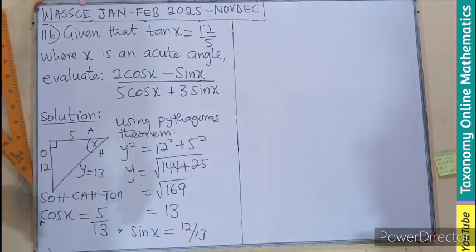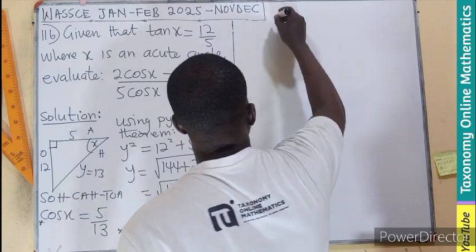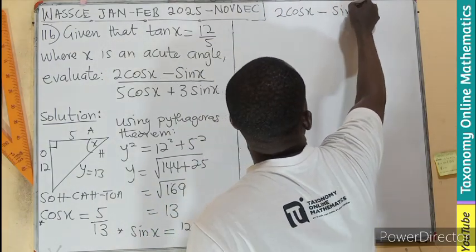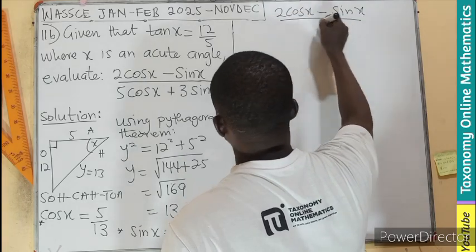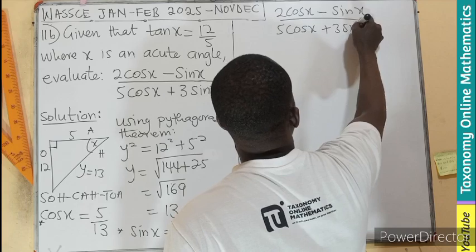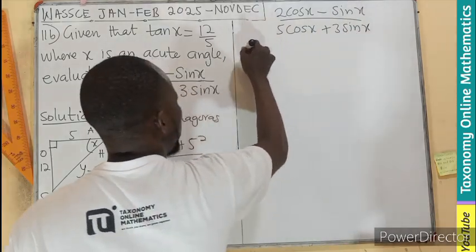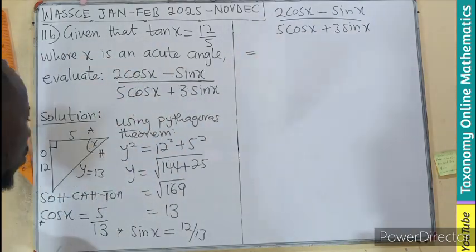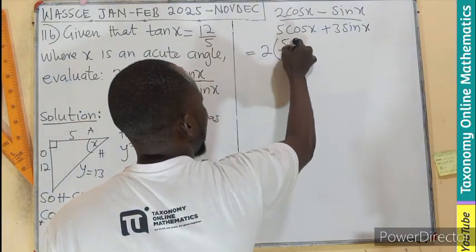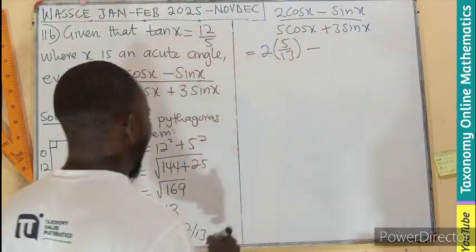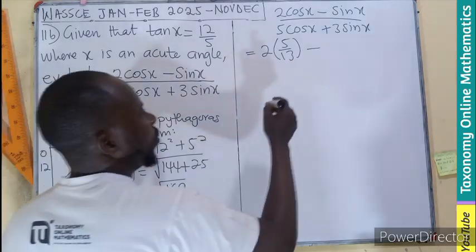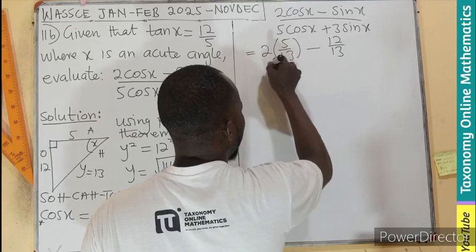So in simplification or the evaluation of 2 cos x minus sin x all over 5 cos x plus 3 sin x, we only do substitution. The cos x is here. So 2 times 5 on 13 minus, 5 on 13. Then the sine,